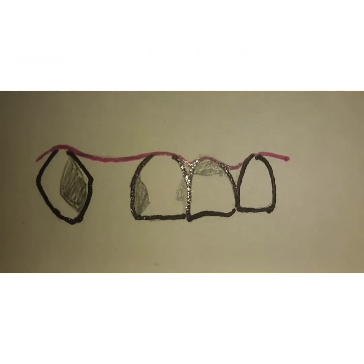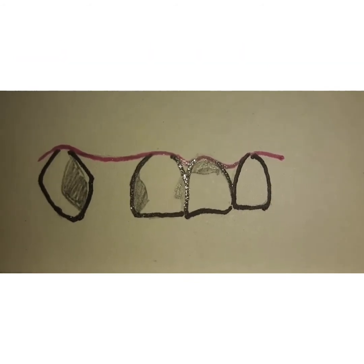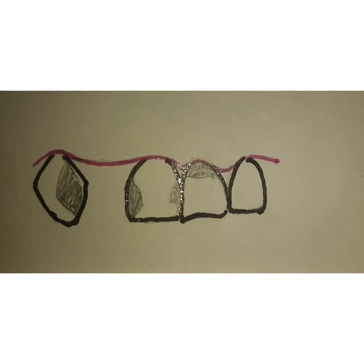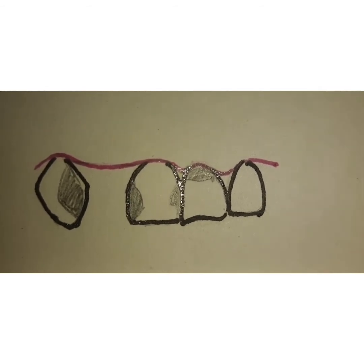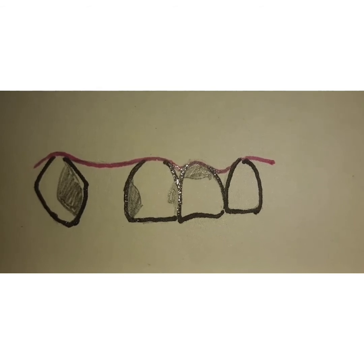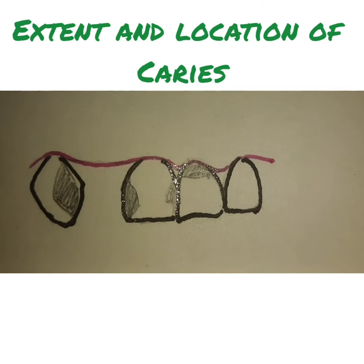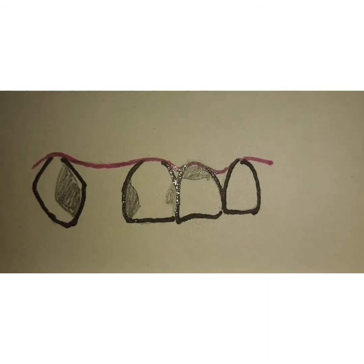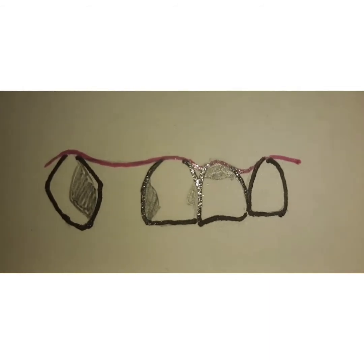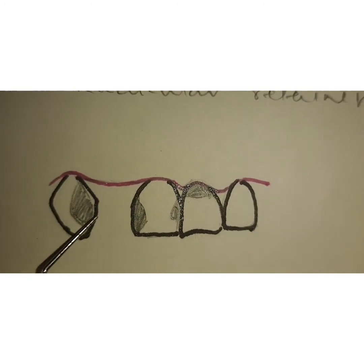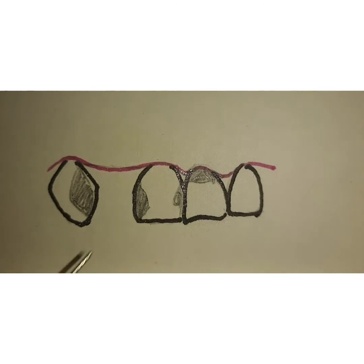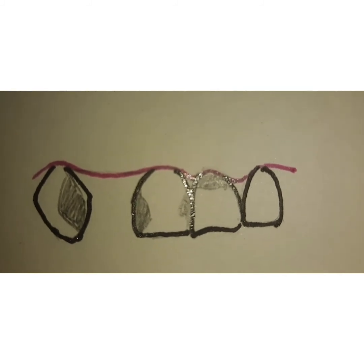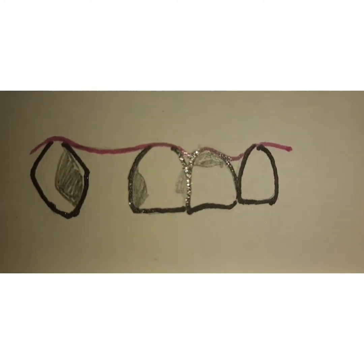Selection of retainers is based on certain factors. One factor is the presence and extent of caries, which determines what type of retainer will be used. If you have small and shallow caries, you can use intracoronal retainers; but if you have large and extensive caries, that will require extracoronal retainers, which take support from the entire tooth rather than confining to internal walls.